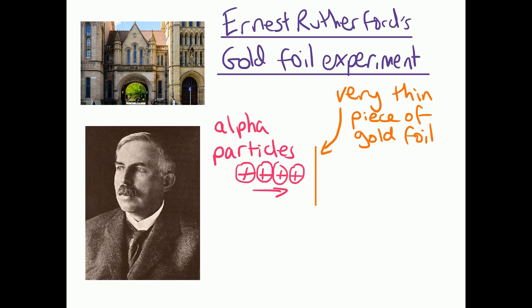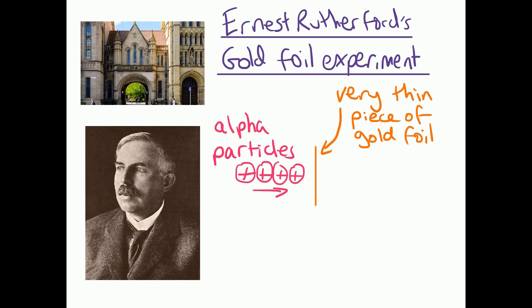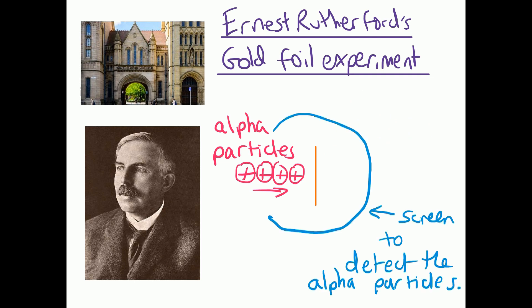Then came along Ernest Rutherford, who was the professor of physics at Manchester University, and he did a crucial experiment where he had a very thin piece of gold foil and he fired alpha particles at the gold foil. He also had a screen surrounding the gold foil to detect where the alpha particles were going, and each time an alpha particle hit the screen there was a small flash so you could see where they were heading once they'd hit the gold foil.